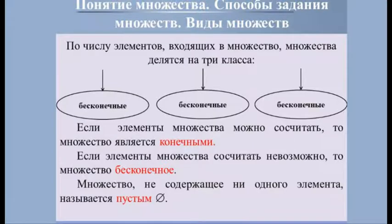По числу элементов множества делятся на три класса. Если элементы множества можно сосчитать, такое множество называется конечным. Например, множество героев романа Булгакова «Мастер и Маргарита», или множество гласных букв в слове «Математика», которое состоит из трёх элементов: А, Е, И — причём гласные считаются только один раз. Если элементы множества сосчитать невозможно, то множество бесконечное. Например, множество натуральных чисел бесконечно, как и множество точек отрезка от нуля до единицы включительно.